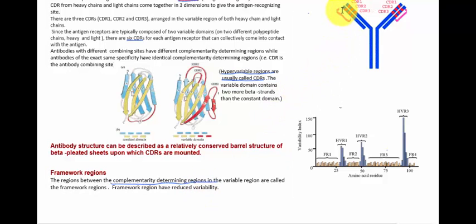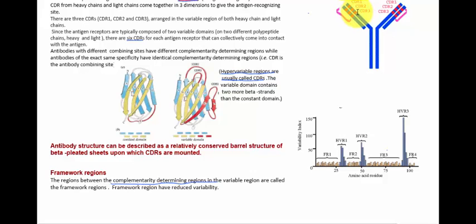So the variable portion is divided into the hypervariable region or CDR region, and the framework region. The hypervariable regions have a higher ratio of different amino acids at a given position — meaning higher variability of amino acids relative to the most common amino acid at that position. The three areas of the variable region that are highly variable form a distinct loop-like structure; they are called CDR1, CDR2, and CDR3. The other areas of the variable region are more consistent in amino acid sequence and are referred to as the framework region.